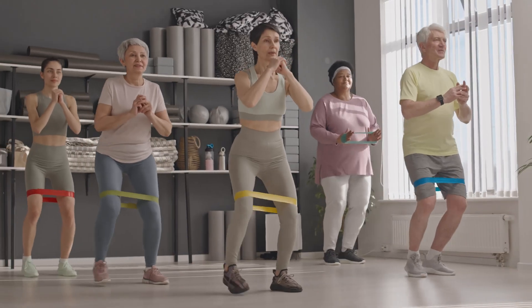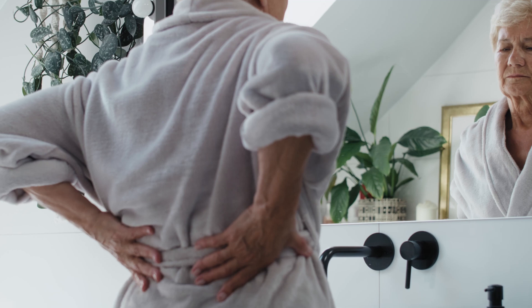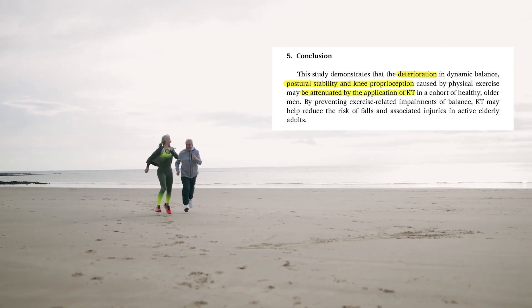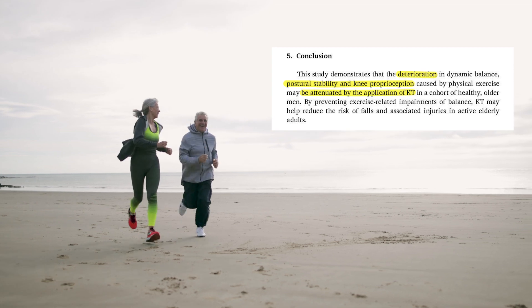Our next study is a 2018 study out of Austria that looked at whether kinesiology tape can counteract exercise-induced impairment in elderly patients. They examined postural stability, dynamic stability, and proprioception. They applied tape to the knee and thigh, put subjects on a treadmill for 30 minutes to fatigue the area, then retested. A week later, the same people repeated the protocol without tape. The no-tape group showed a 20% decrease in postural stability, a 16% decrease in dynamic stability, and a 53% decrease in proprioceptive ability, whereas the tape group saw minimal decreases of 3%, 0%, and 3% in proprioceptive ability. They concluded that kinesiology tape on the knee has the ability to counteract the negative effects that exercise and fatigue has on the body.